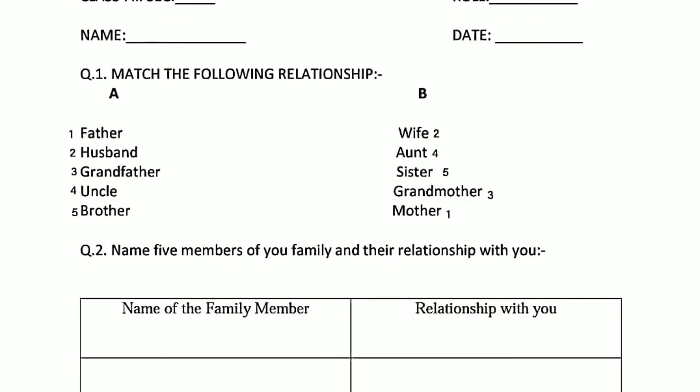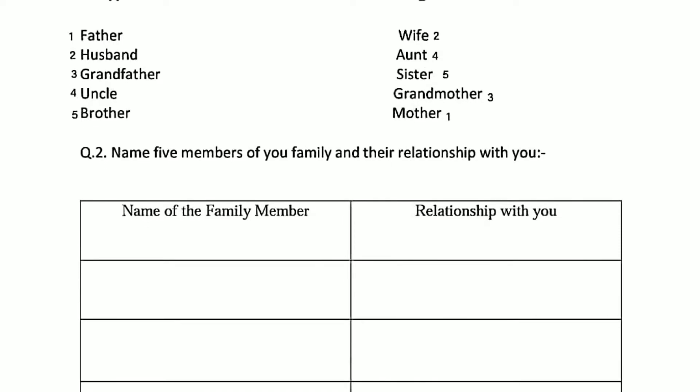The next question is: name 5 members of your family and their relationship with you. What is your relationship with them? Are you someone's brother? Are you someone's grandson? Are you your father's son? In the first column, write the name of the family member. If you write your father's name, then you write your relationship with him.